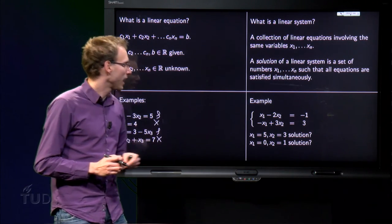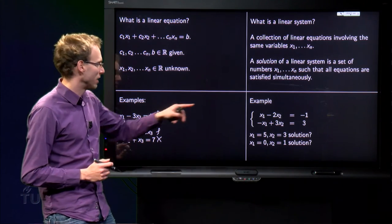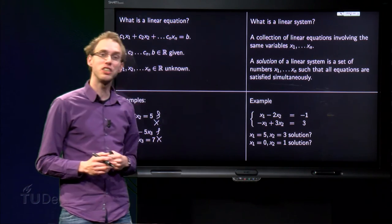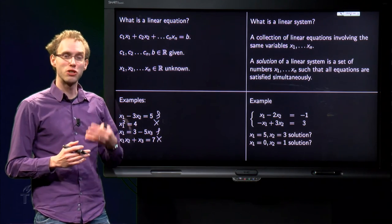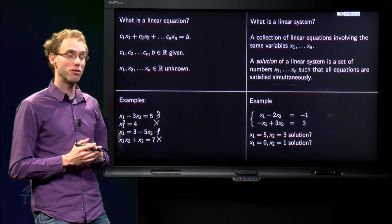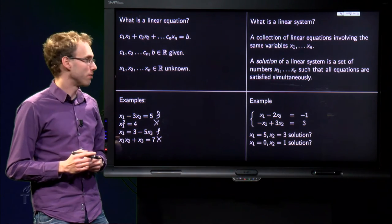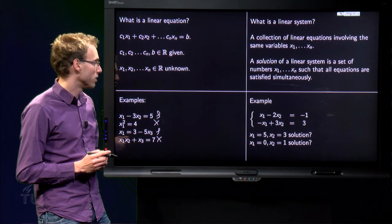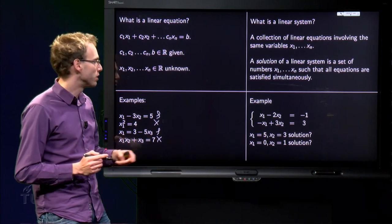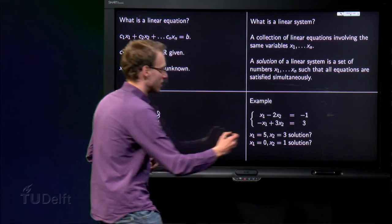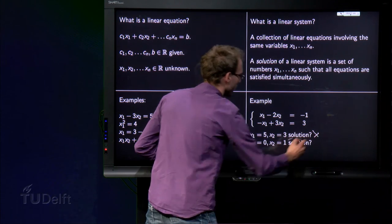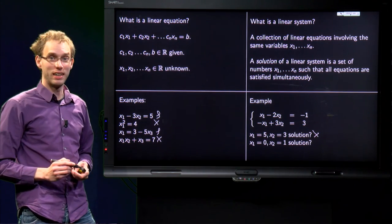Is X1 equals 5 X2 equals 3 a solution? Well, let us take a look. 5 minus 6 equals minus 1. So this combination satisfies the first equation. However, minus 5 plus 9 is not equal to 3, which means that this does not satisfy the second equation. So it is not a solution of the linear system.